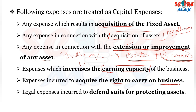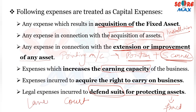The last type is legal expenses incurred to defend suits for protecting fixed assets. For example, if there is disputed land belonging to a company and there is a court case related to it, the legal expenses we incur to protect that land will be termed as capital expenditure.